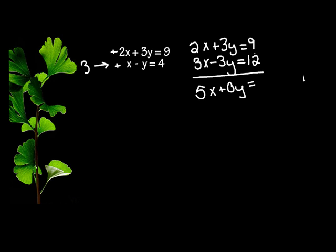Then I add down and I'll get 21 because 9, 10, 11, 21. But 0y is really 0. So I have 5x equals 21.